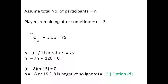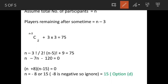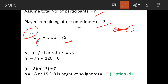Now we'll solve using the conventional combinations method. Let the total number of participants be n. After three players became sick, the remaining participants are n minus 3. Since two players are involved in each match, the number of matches among the remaining players is (n−3)C2. The equation becomes: (n−3)C2 + 3×3 = 75.